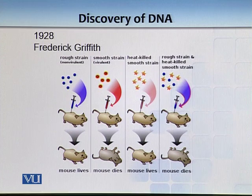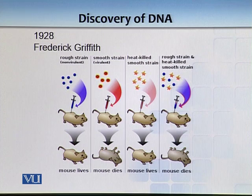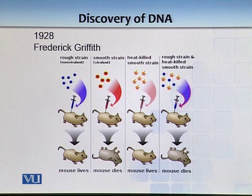The smooth strain has a carbohydrate shell on it which makes it virulent because it escapes your immune system. When you inject mice with a rough non-virulent strain, it doesn't die — it lives. But when you inject a smooth strain, the mouse dies.